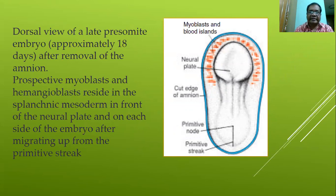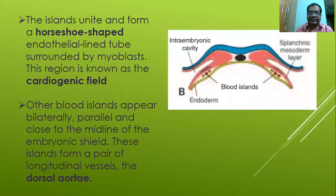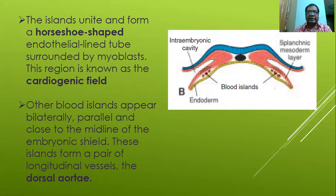The prospective myoblasts and hemangioblasts reside in the splanchnic mesoderm in front of the neural plate and on each side of the embryo, after migrating up from the primitive streak. The islands unite and form horseshoe-shaped endothelial-lined tubes surrounded by myoblasts. This region is known as the cardiogenic field. Other blood islands appear bilaterally parallel to and close to the midline of the embryonic sheet, forming a pair of longitudinal vessels known as the dorsal aorta.